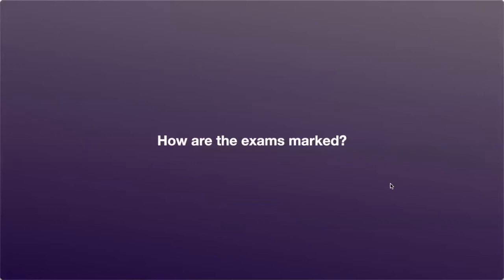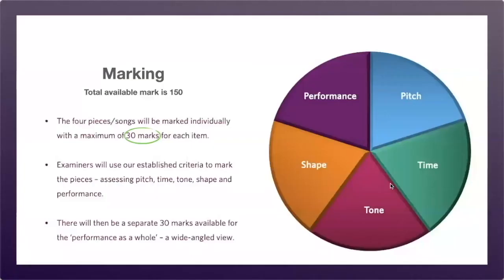How are the exams marked? The total available mark for the exam is 150. The four songs will be marked individually with a maximum of 30 marks for each song. Examiners will use the established criteria to mark the pieces. There will also be a separate 30 marks available for the performance as a whole, which is a wide angle view of the performance.